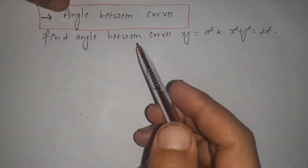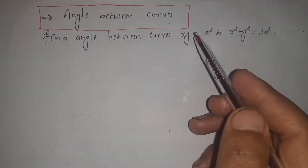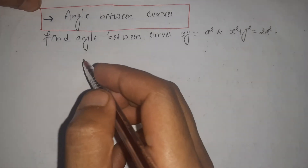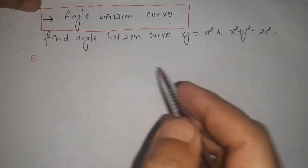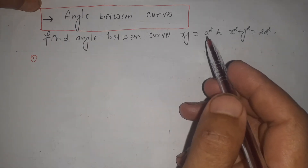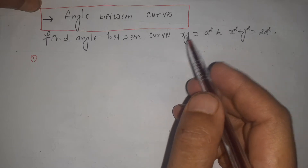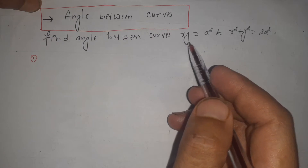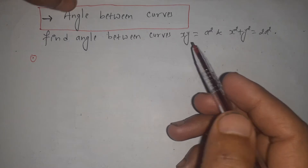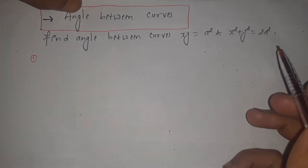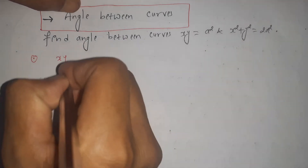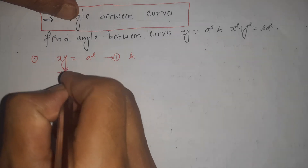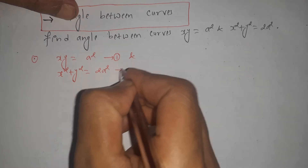Today's question is: find the angle between the curves. Two curves are given — one is xy = a² (equation 1), and the next one is x² + y² = 2a² (equation 2). Remember one very important point: while calculating the angle between the two curves, we have to first calculate the slope of the tangents at the point of intersection.